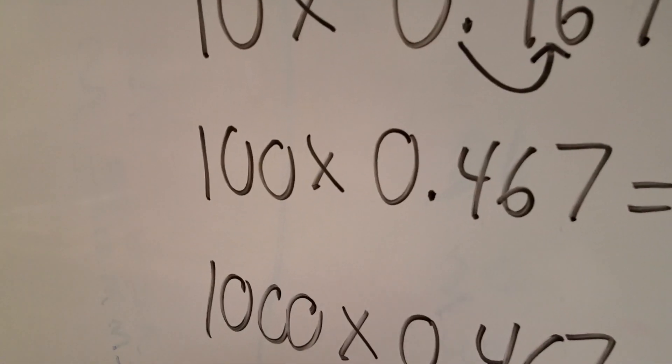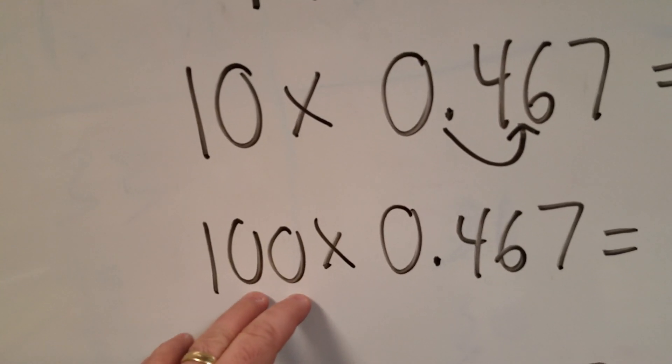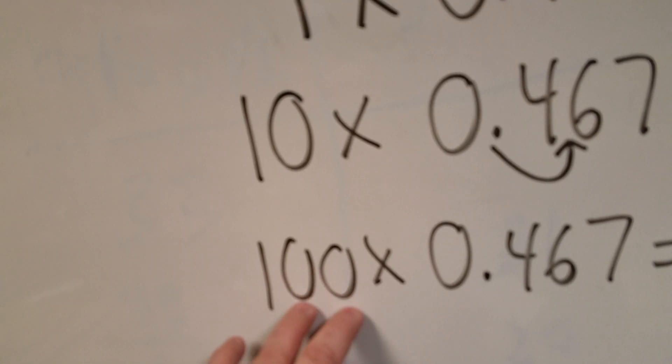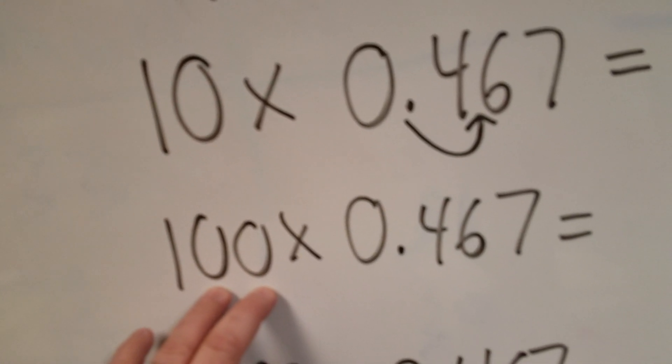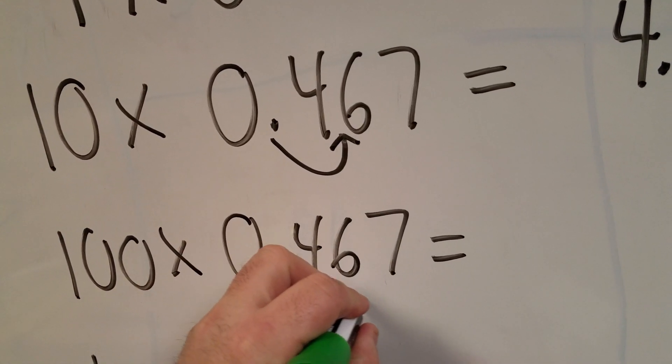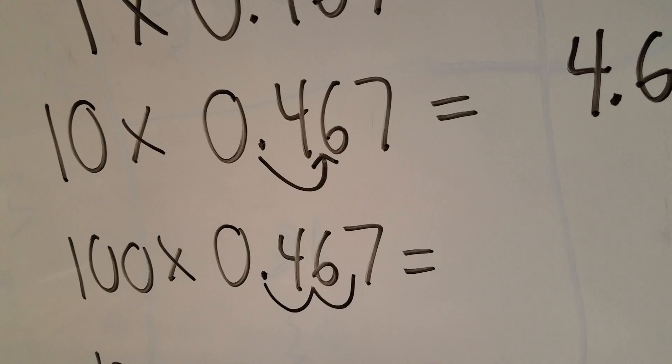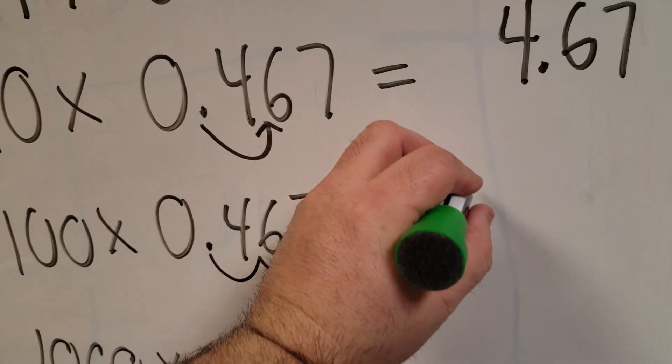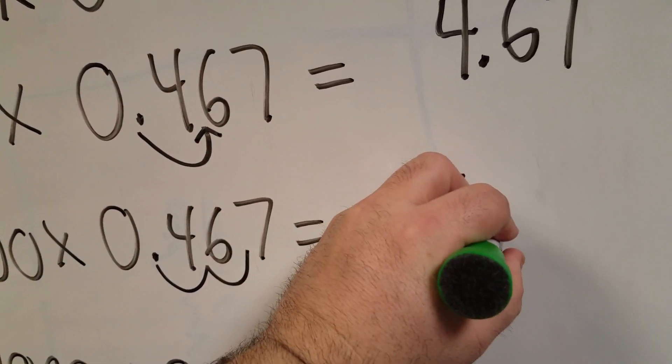Well, there are two powers of 10. 10 times 10 is 100. So that's 2 powers of 10. So if I go along with this pattern, I'm going to move the decimal over 2 places when it's times 100. So that gives me 46.7.